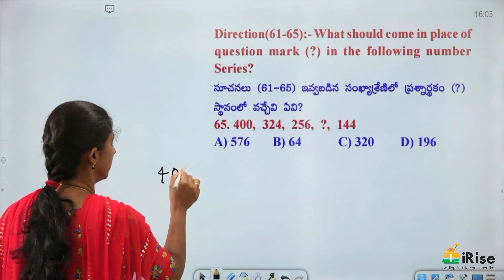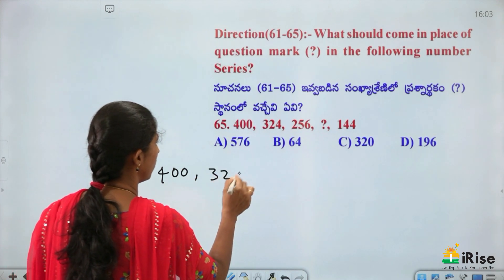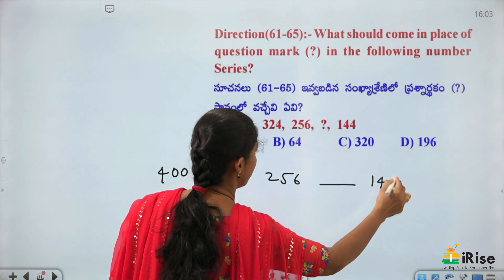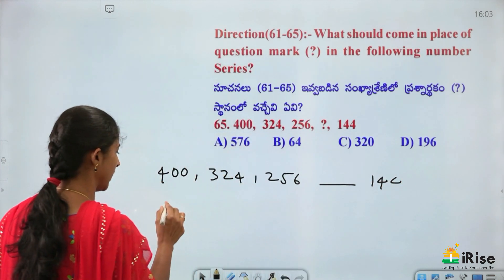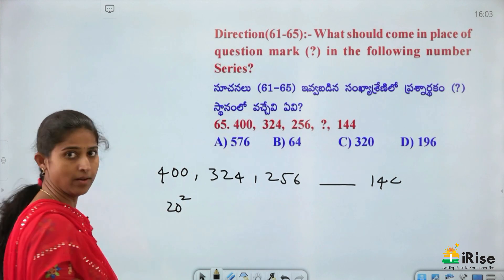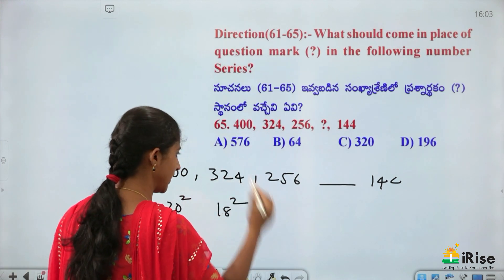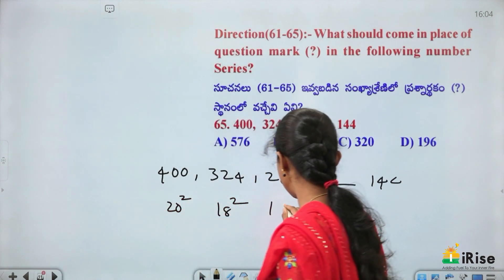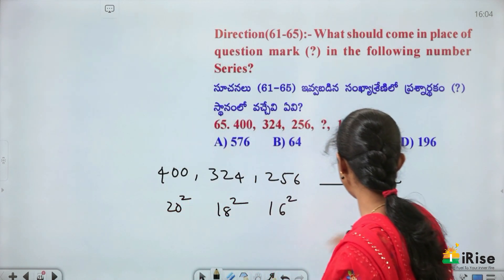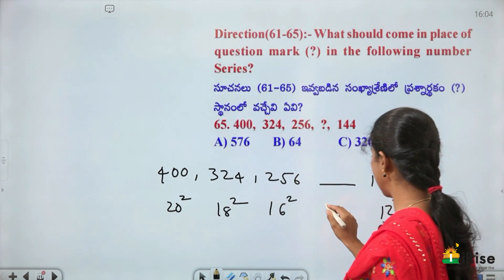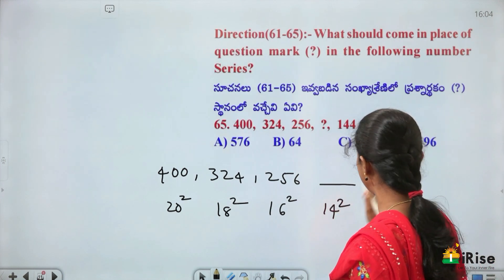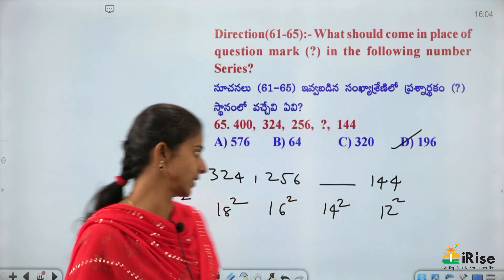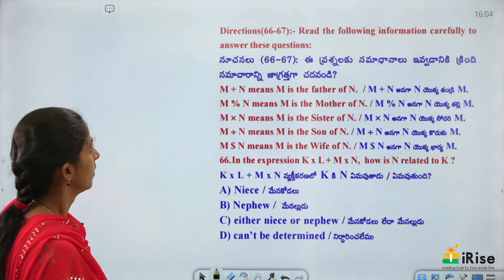Series: 400, 324, 256, 144 — what is the next number? These are perfect squares: 20², 18², 16², 12². The pattern skips — the missing square is 14². So 14² = 196 is the answer.